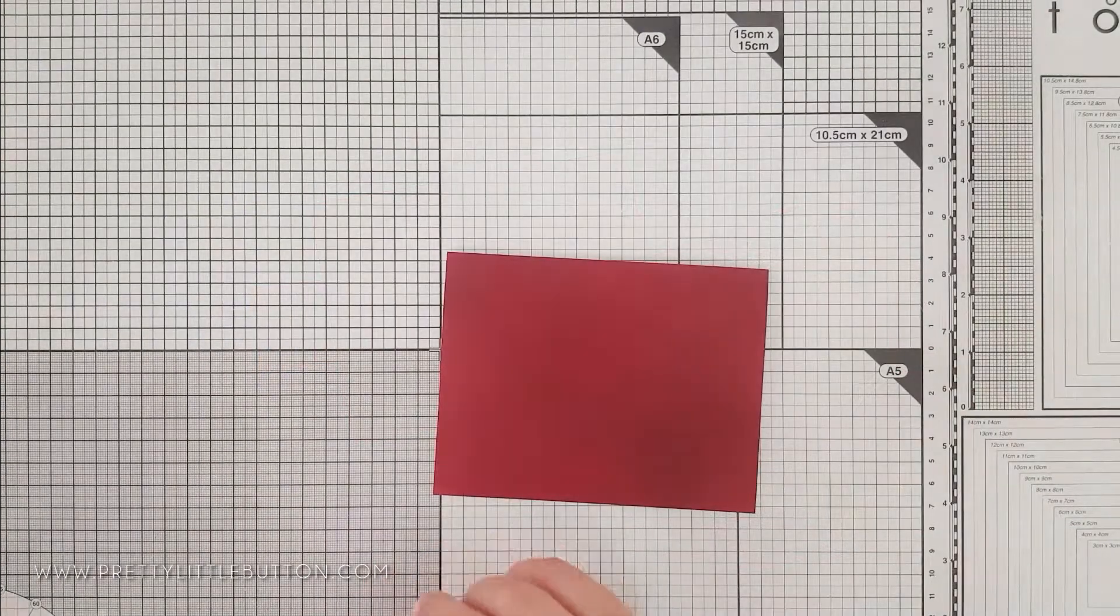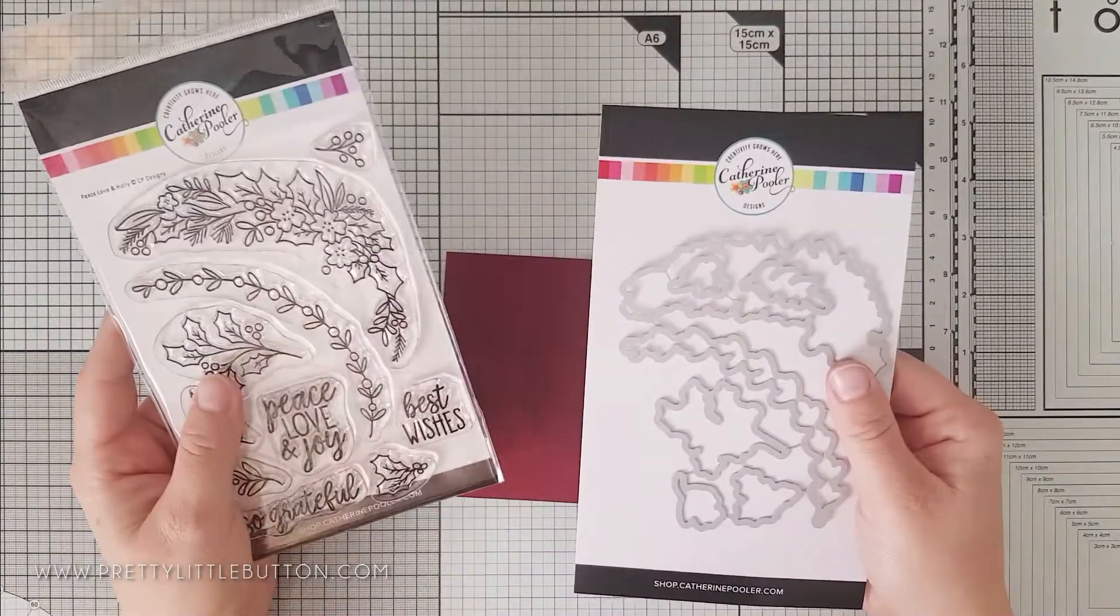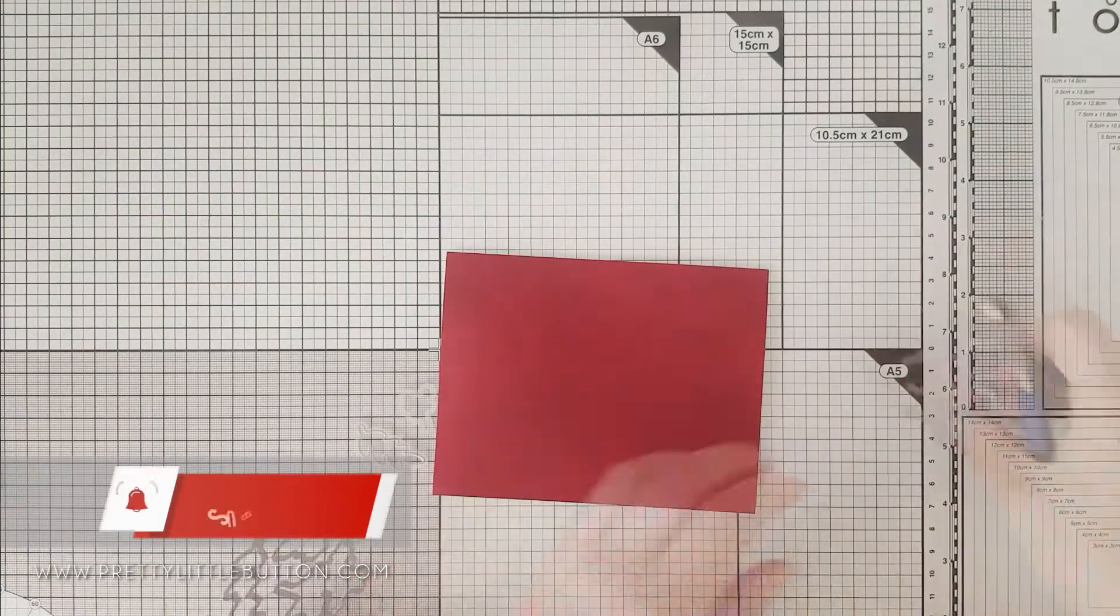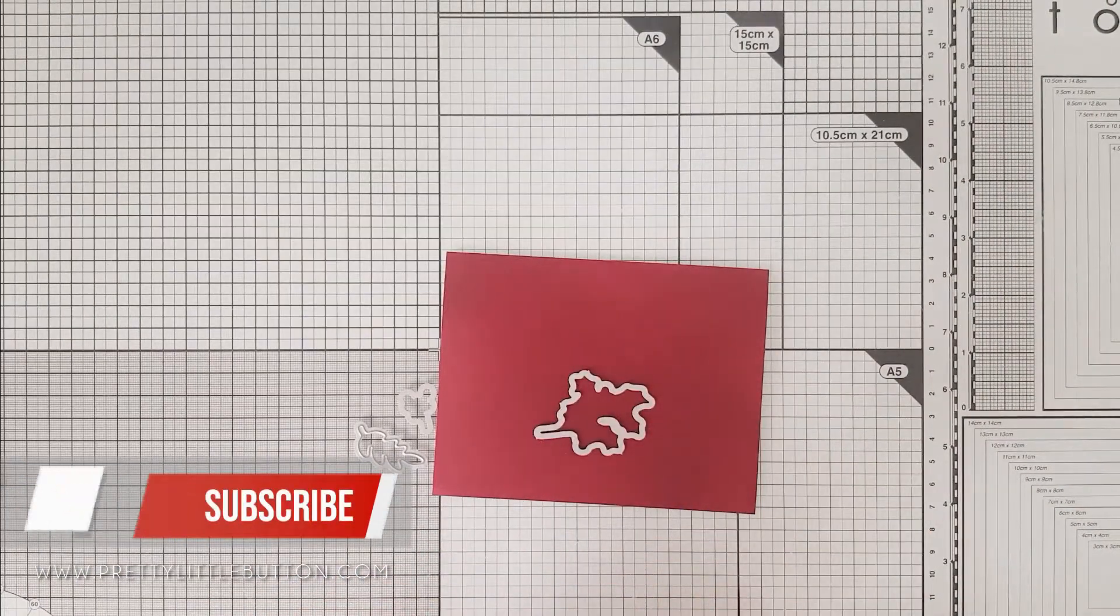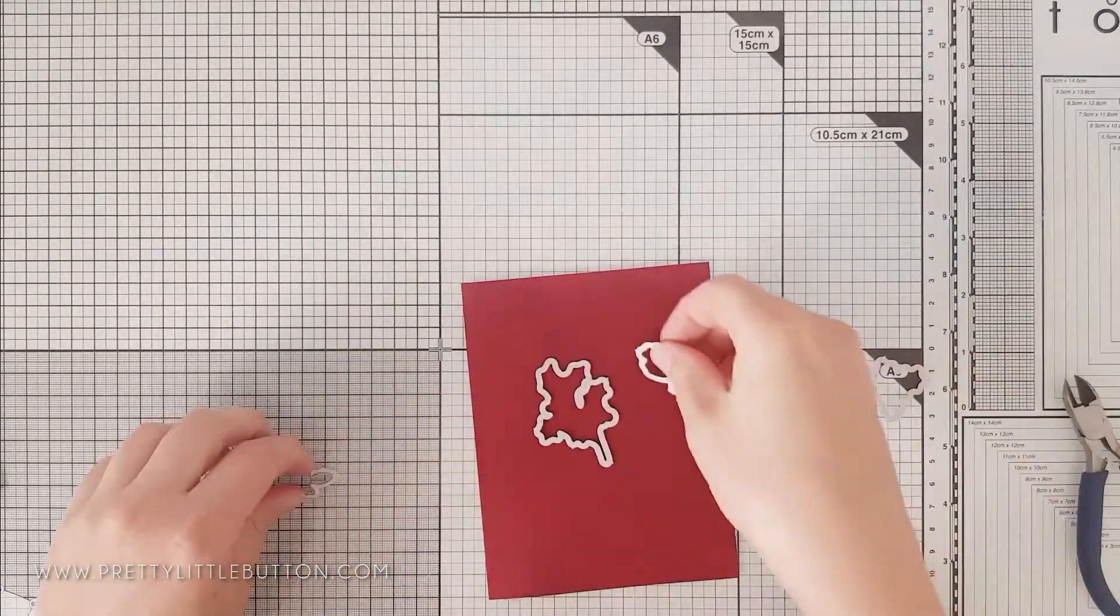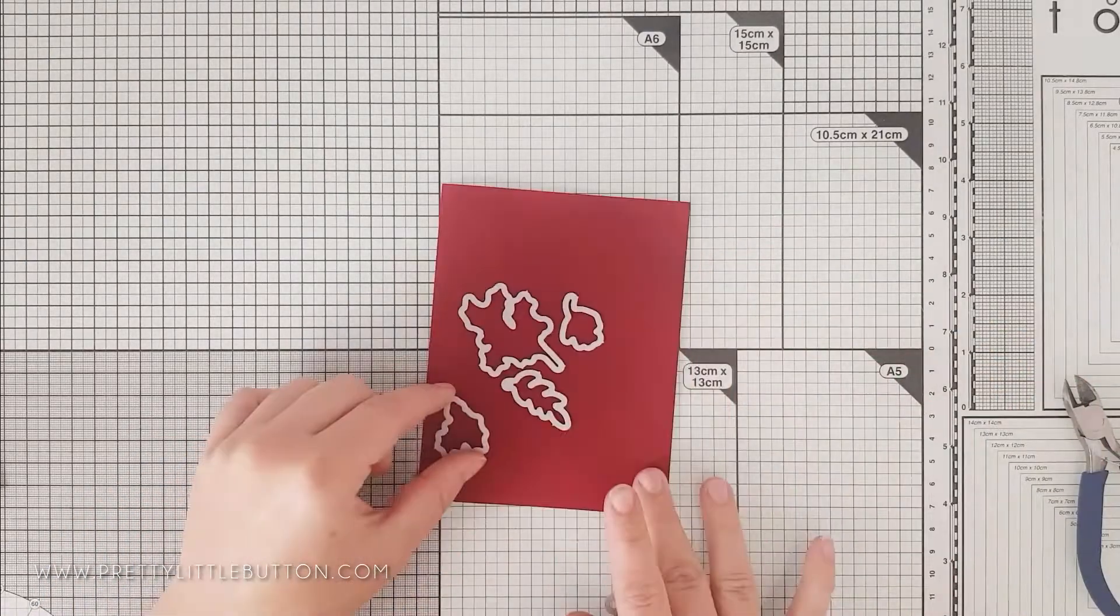Now to add the texture to the background, I am going to use the coordinating dies for the Peace, Love and Holly stamp and die set. Once I've used my snips to break up the dies from one another, I'm then going to position them onto that background to create an interesting pattern.